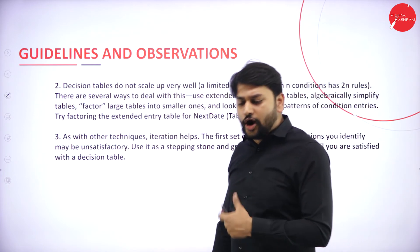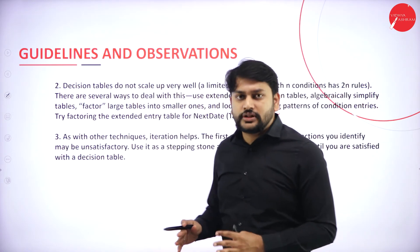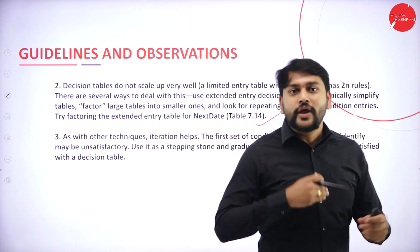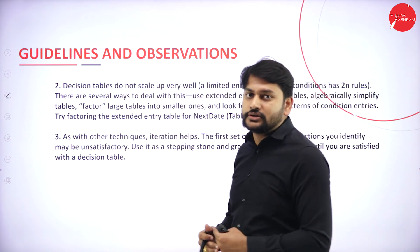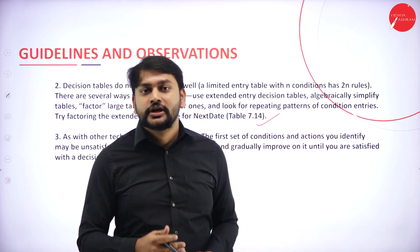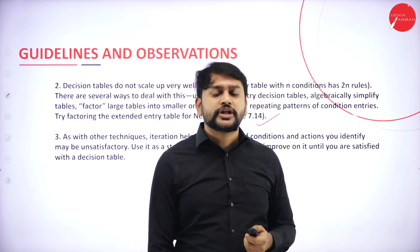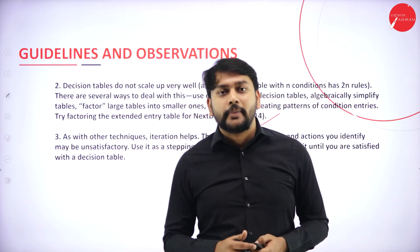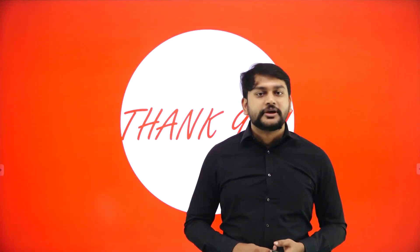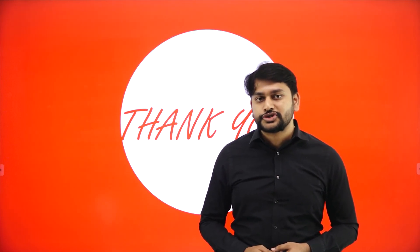The third point: many problems take multiple iterations to arrive at an exact result. In the first iteration, the result may not be satisfactory, but as you move through each subsequent iteration, the accuracy of the result increases. With this, we conclude the chapter on decision table-based testing. Thank you very much for watching — please share and like if you found this useful.